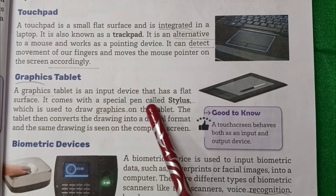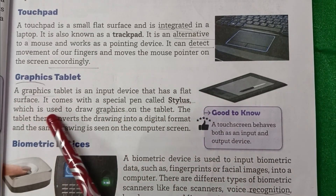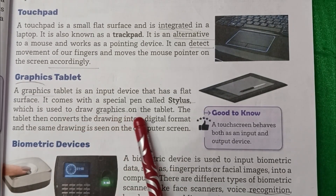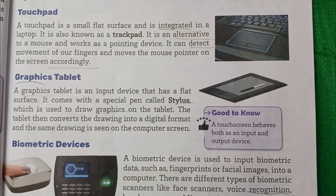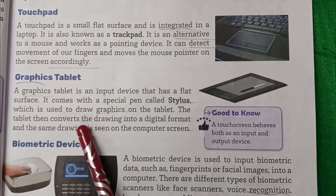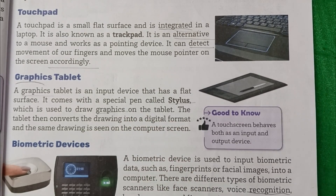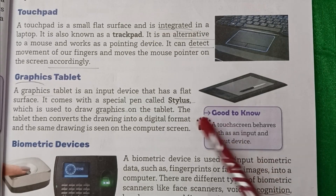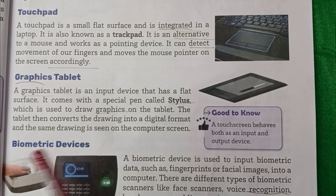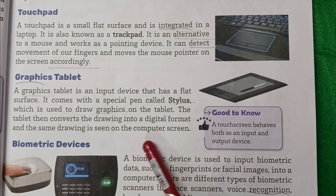Graphics Tablet. A Graphics Tablet is an input device that has a flat surface. Graphics Tablet ek input device hota hai jisme flat surface hota hai. It comes with a special pen called a stylus, jo tablet par graphics draw karne ke liye use hota hai. The tablet then converts the drawing into a digital format, and the same drawing is seen on the computer screen.